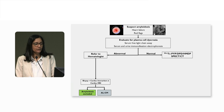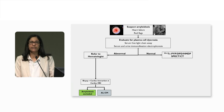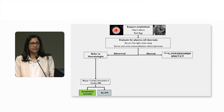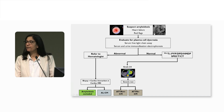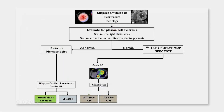If the light chain evaluation is normal, then these patients are candidates for bone tracer scintigraphy. If that is performed and the patients show a positive scan, then the diagnosis of transthyretin amyloidosis is established. You send off a genetic test — if that's negative, you conclude it's wild type; if it's positive, then it's variant transthyretin cardiomyopathy.